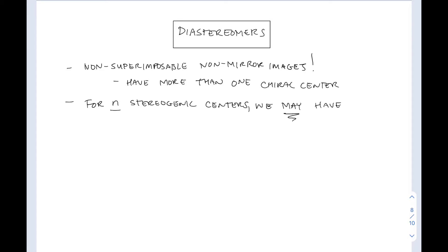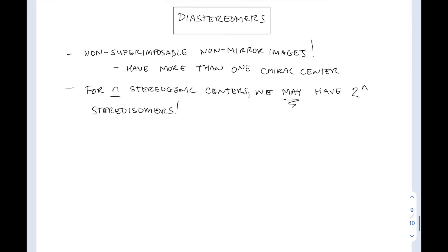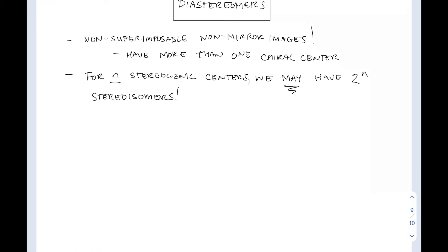For n stereogenic centers, we may have 2^n stereoisomers. So if you had two stereogenic centers, you have 2^2, which is four stereoisomers. This is the maximum possible — that doesn't mean there actually are this many; it's just the maximum amount you may have.